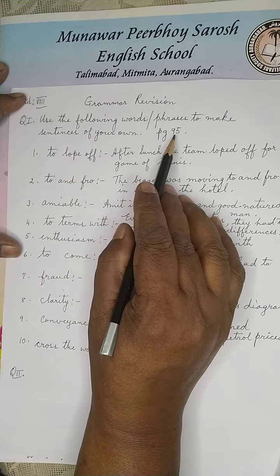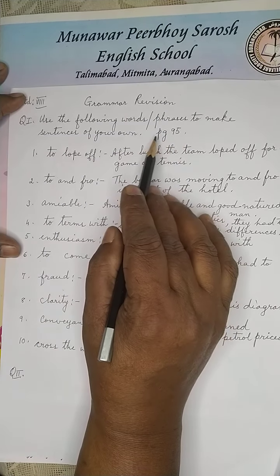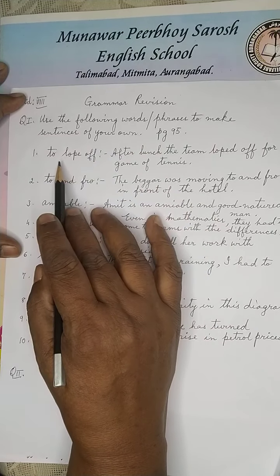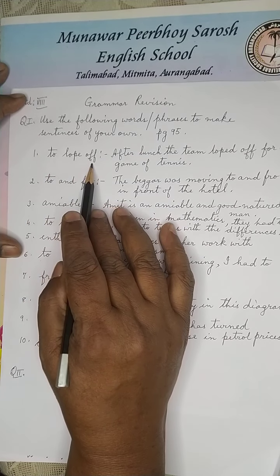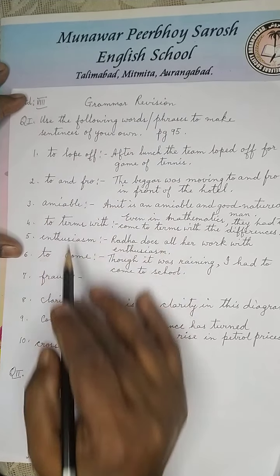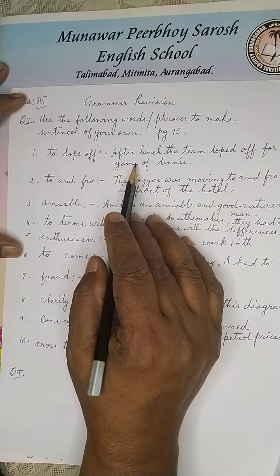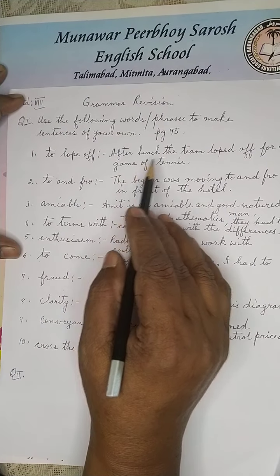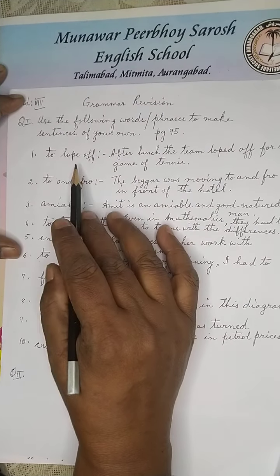Refer to page number 95. To lope off — I have given you some sentences, pay attention and write them in your classwork book.